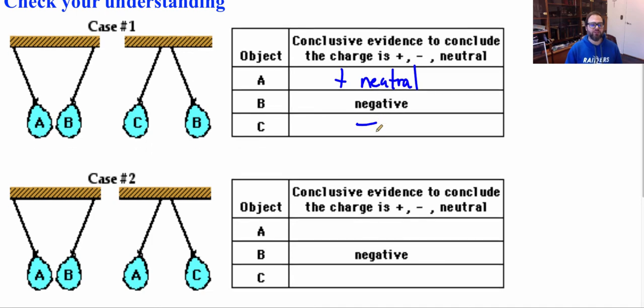Now let's look at case two. For case two, A and B attract. So once again, we look at case two, A is either positive or neutral. But if I look at the second part of case two, A repels C, therefore A and C must be like charges. A now is not neutral, so therefore A must be positive, and we also know then that C is also positive.